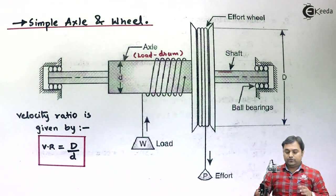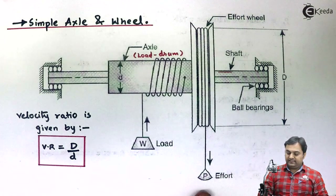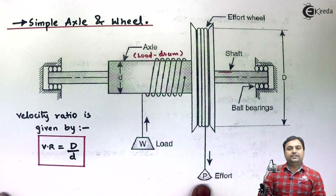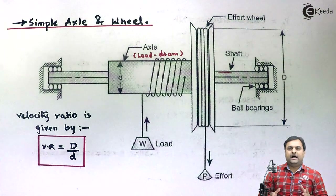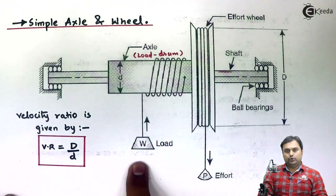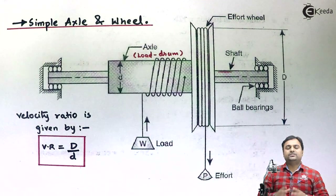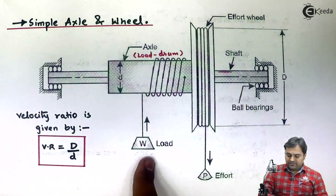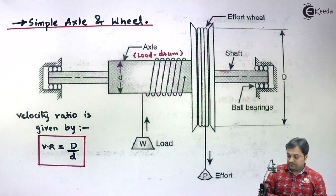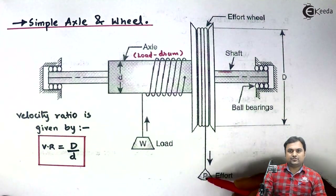Now regarding the working of simple axle and wheel: we apply the input force at the effort wheel. This effort can be applied by pulling the rope. Our aim is to lift the load attached to the load drum. A large load is lifted by a very small effort — that is why it is called a simple machine.